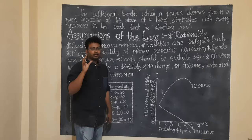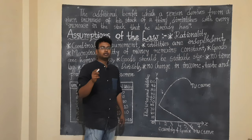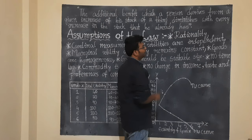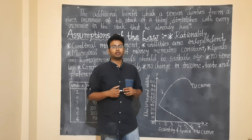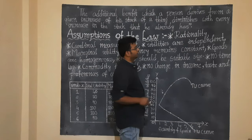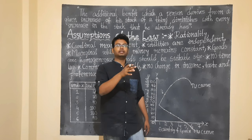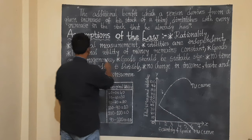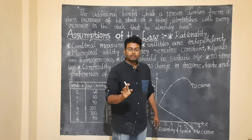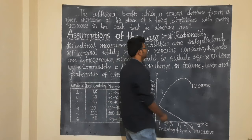The next assumption is cardinal measurement — utility can be measured in numbers. Next: marginal utility of money remains constant. So whether it is the first apple, second apple, third apple, or fourth apple, the price paid remains the same. The marginal utility of money is constant.